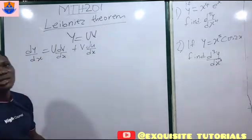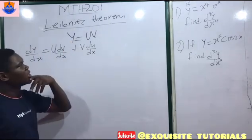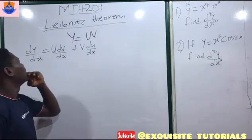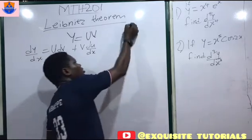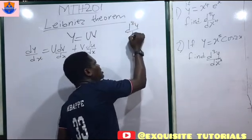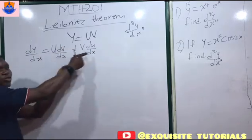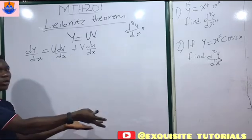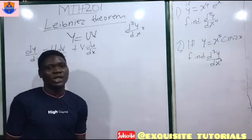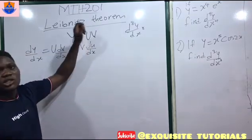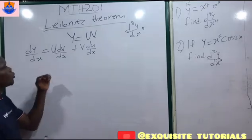Leibniz's theorem is all about differentiating more than once. For example, if you are asked to find the nth order derivative of a function — say the 8th derivative — would you go through the process of using the product rule over and over? You would only waste your time. This is where Leibniz's theorem comes into place.